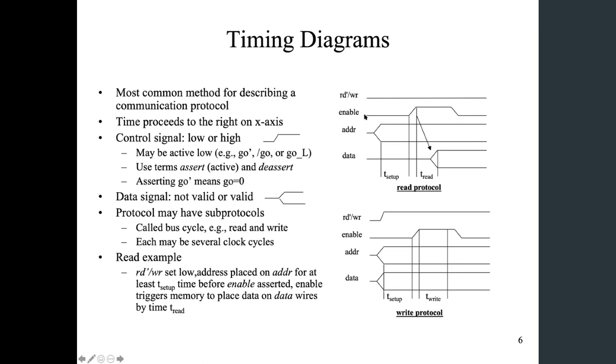And when you see enable going from zero to one, that is to enable the read. So we're going to read the actual data. And for this particular design, we use memory address or some sort of address to read the data. So that's why we need the address to be valid before we raise the enable signal from low to high.